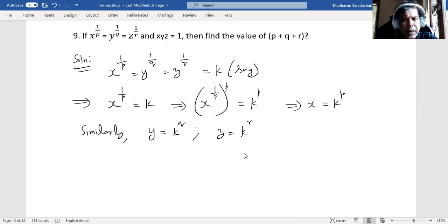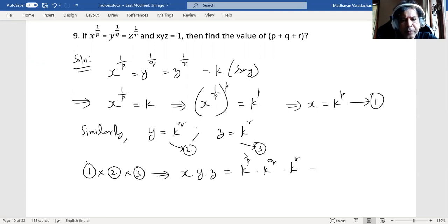Now, let us multiply these three. This is the first equation, second equation, third equation. I will say 1 multiplied by 2 multiplied by 3 will give us x into y into z. That is equal to k to the power of p into k to the power of q into k to the power of r. That will give you k to the power of p plus q plus r.